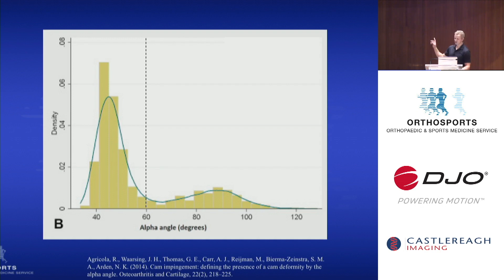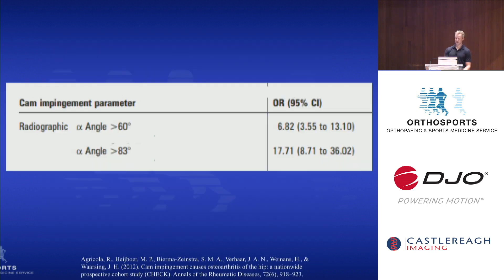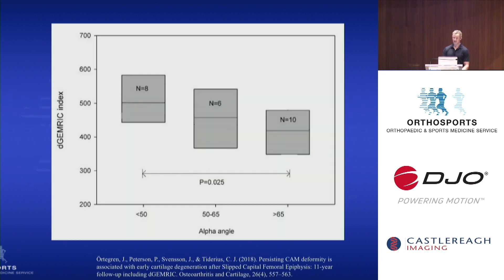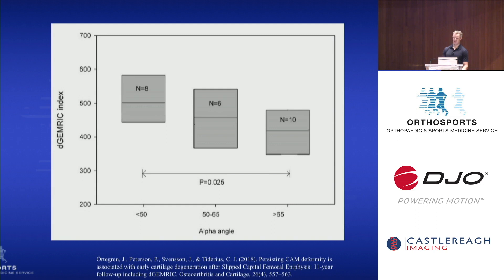You can see the bimodal distribution of alpha angles, with the left grouping representing healthy hips and the right representing CAM pathology. Alpha angles over 60 degrees increase the risk of developing hip arthritis by about seven times, and if the alpha angle is over 83 degrees, that increases to about 17 times. This also applies to young adults. One study of athletes with a mean age of only 24 found a strong inverse correlation between alpha angle and cartilage thickness, and this finding holds true even when symptoms are absent and the diagnostic criteria for FAI are not met.